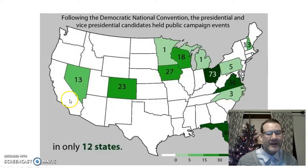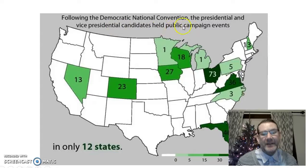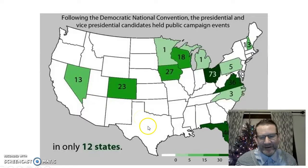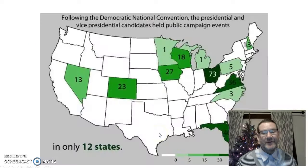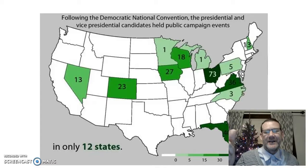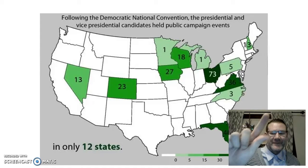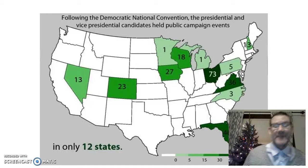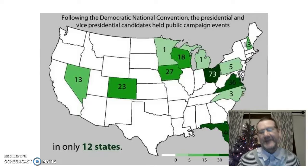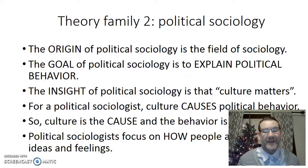Presidential candidates will go to California and Texas to raise money, even Democrats go to Texas to raise money, and Republicans raise money in California all the time. But for public campaign events, they are going to swing states. I have a theory: politicians will behave a certain way to maximize their winning. And I have evidence for it — a basic statistical method, just counting where they went. This shows a strong effect on how people behave.